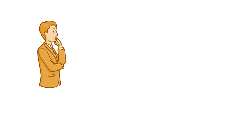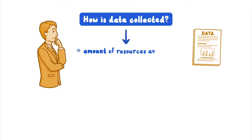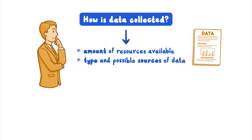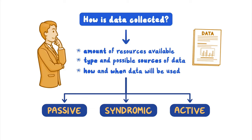Public health experts must consider how best to collect the data. To make this decision, they consider the amount of resources available — like time, funding, staffing, and equipment — the type and possible sources of data, and how and when the data will be used. The different ways of collecting surveillance data can be generally categorized as passive, syndromic, or active.